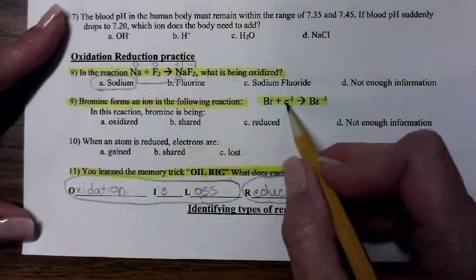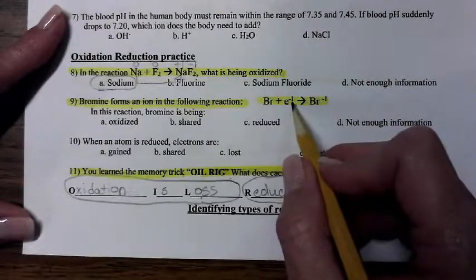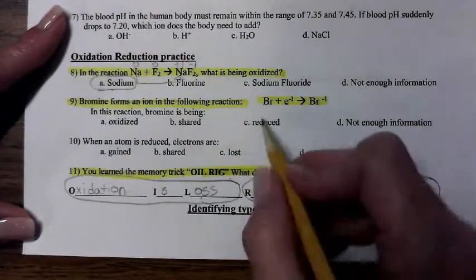If bromine is gaining electron because it's being added to it, that must mean that bromine is being reduced.